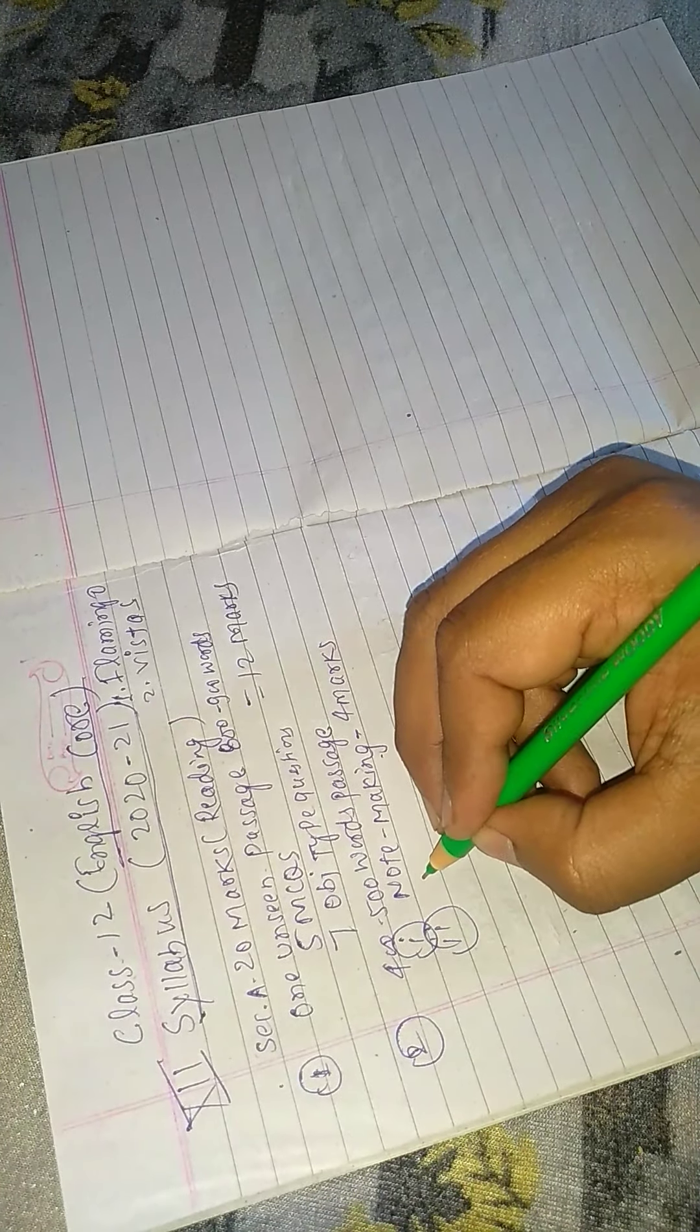Now, writing skills which will be Section B. Third number question which you have to prepare: notice writing, poster making, invitation.